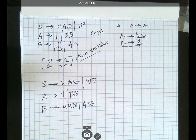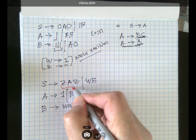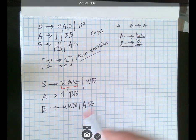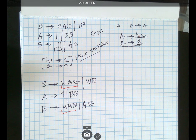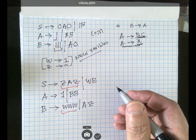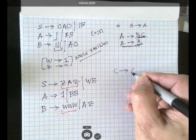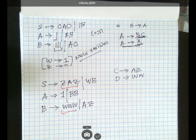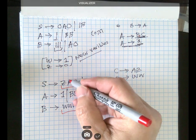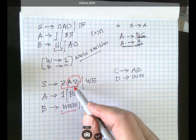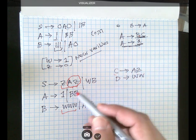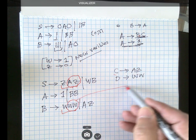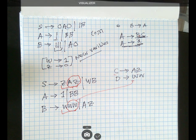Now looking at what we have, some right-hand sides are still problematic because they need to be in BC format. So I'm going to introduce two new variables: C and D. C will be AZ, and D will be WW. I use this grouping because I want to reduce each right-hand side to a single pair of variables.